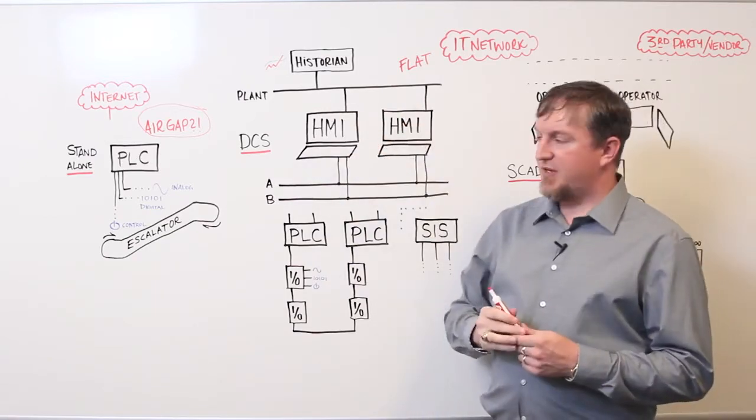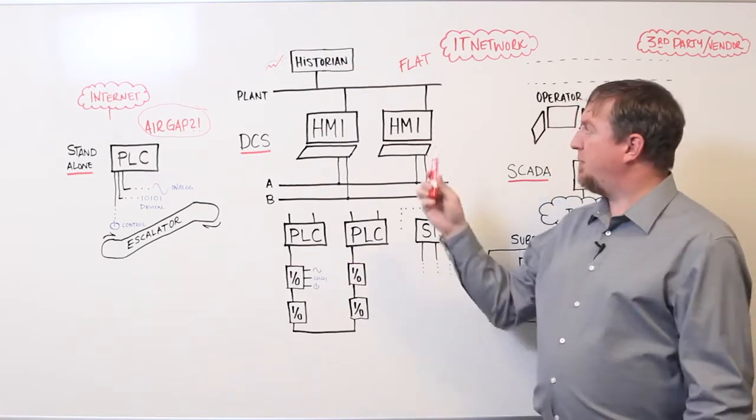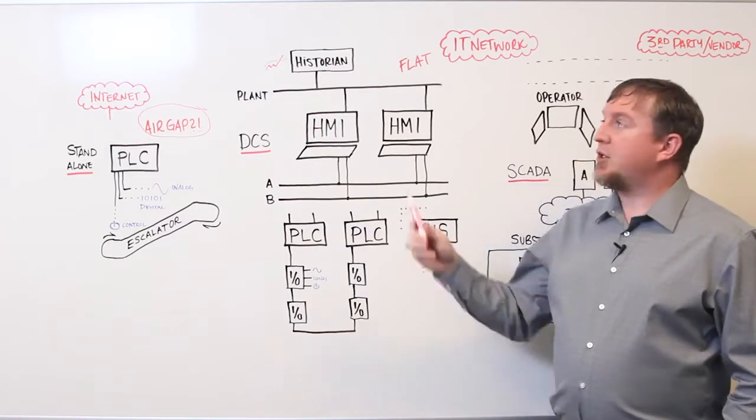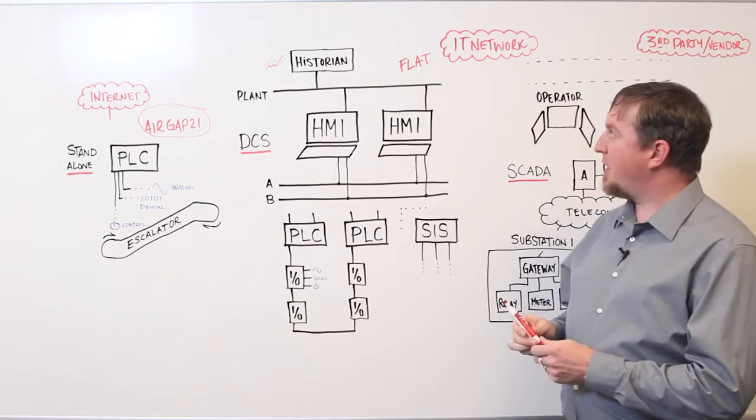Then, you have multiple human-machine interfaces that allow the operators to control the process. You have connectivity to the plant-facing network where you have a data historian, where an engineer can look at the different logs from the control system and look at the data trending over time.